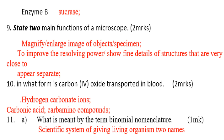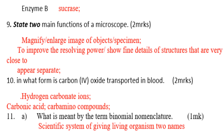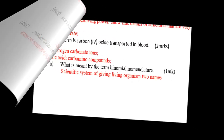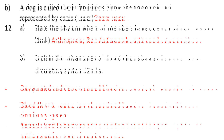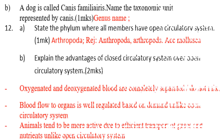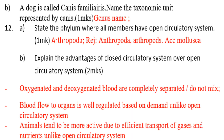What is meant by the term binomial nomenclature? Binomial nomenclature is giving an organism two names — that is, genus and species. The taxonomic unit represented by Canis: Canis is a genus name.